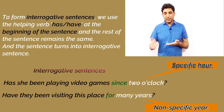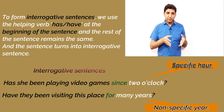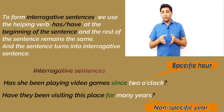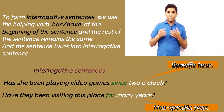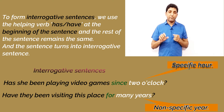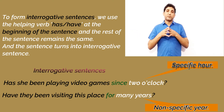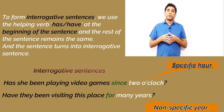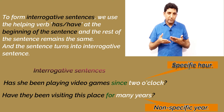Let's take the second sentence: 'they have been visiting this place for many years'. We pick the helping verb 'have', bring it to the beginning of the sentence, and it turns into: have they been visiting this place for many years?